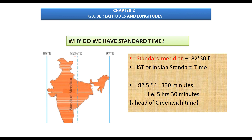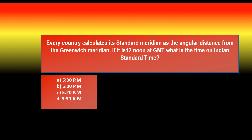Note that some countries like Russia have more than one standard time. The key rule to remember: when Greenwich time is given, add 5 hours and 30 minutes to get India's local time. Try the practice question provided, and share your answer in the comment box.